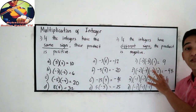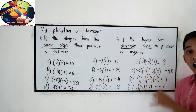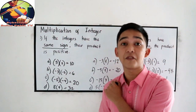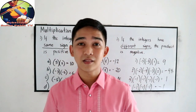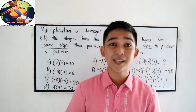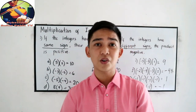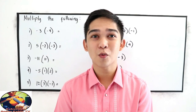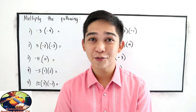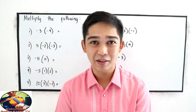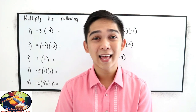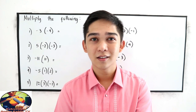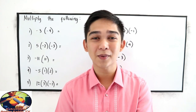Let us recall: if the number of negatives in our given is odd — 1, 3, 5, 7 — the sign is negative. But when the number of negatives is even, the answer is positive. In short, if we multiply unlike signs, the result is negative. If we multiply like signs, the result is positive.